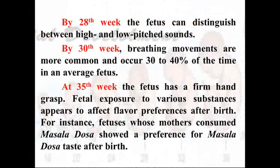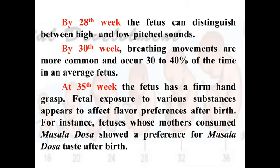By the twenty-eighth week, the fetus can distinguish between high and low pitch sounds. By the thirtieth week, breathing movements are more common and occur thirty to forty percent of the time. At the thirty-fifth week, the fetus has a firm hand grasp. Fetal exposure to various substances appears to affect flavor preferences after birth — for example, if a mother consumed masala dosa during pregnancy, the child showed a preference for that taste after birth. Your tastes are a subset of what your mother consumed while carrying you.